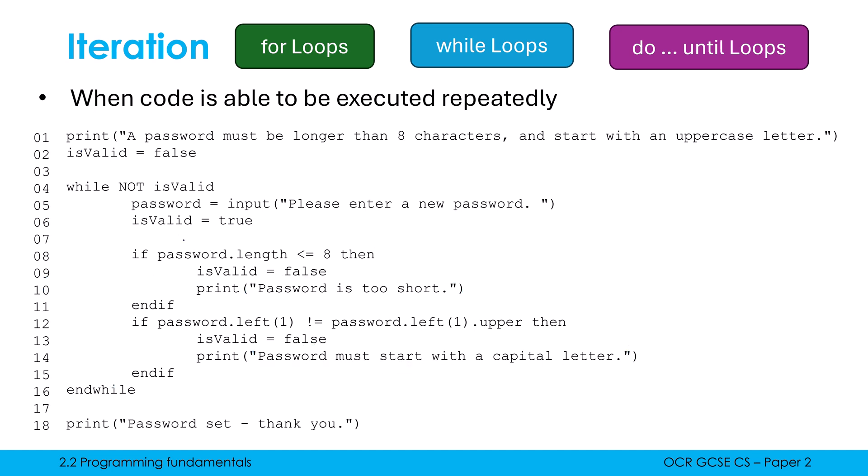But if in the second iteration I typed in 'computing' as my password with a capital C, well, because this has a length of nine, this code doesn't run. And because the left-hand character is equal to the uppercase version of that character, which happens to be the same character, this code also doesn't run because it also doesn't apply. So therefore isValid remains true.